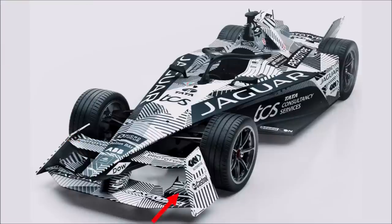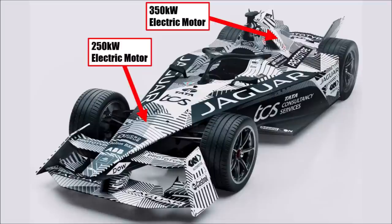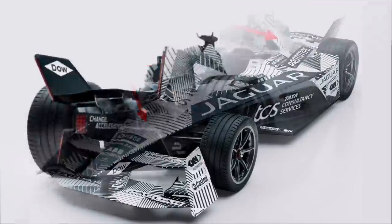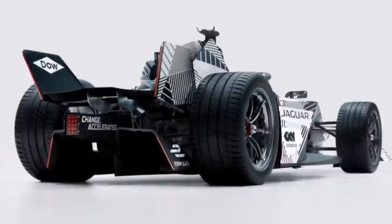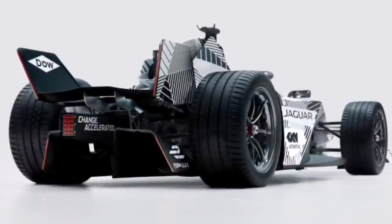We have a front wing that goes back to a similar design to Generation 1, with a flat upper wing element for design only. There are small flaps in front of the front wheels and the longer centre section is slightly cambered. The nose is similarly thick to Generation 2, and there is a 250kW electric motor sitting at the front now too — but this one will only be used for recuperation, not acceleration. That allows the car to accelerate with only 350kW but to decelerate with 600kW to charge the battery, enabling them to get rid of the rear hydraulic brakes. Recuperation now produces 40% of the energy used during a race, instead of 25% in Generation 2.